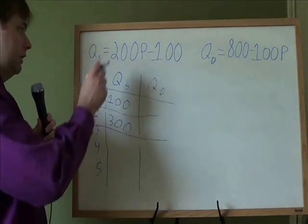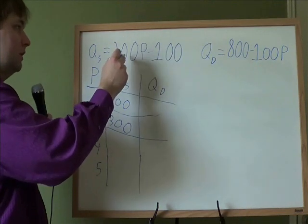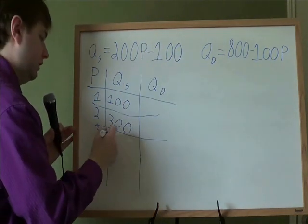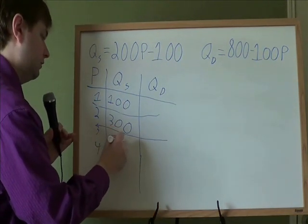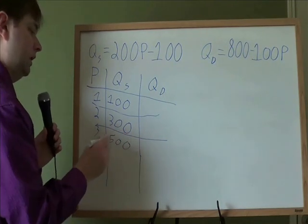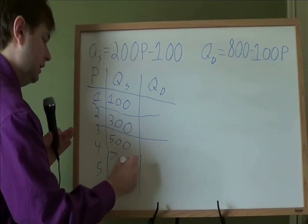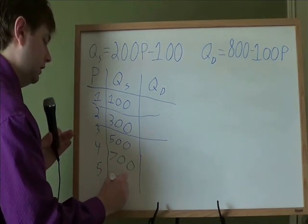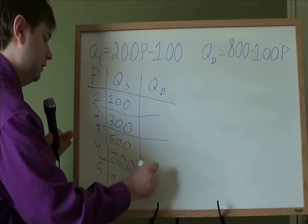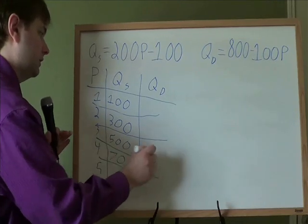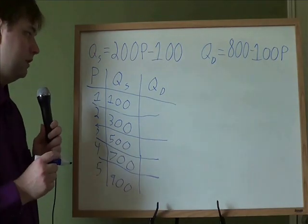And we just keep going. At $3, 200 times 3 is 600, minus 100. Farmers want to sell 500 apples a week at that price. And this is easier with a calculator, so I'll just go through and show you the next two end up being 700 and 900. And now we've done the supply, how much farmers want to sell at these different prices.